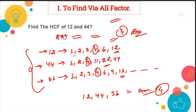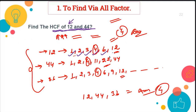Let's look at this question: Find the HCF of 12 and 44. These are small numbers, so we can find the HCF very easily. The factors of 12 are the numbers which divide 12: 1, 2, 3, 4, 6, and 12. All these numbers are the factors of 12.